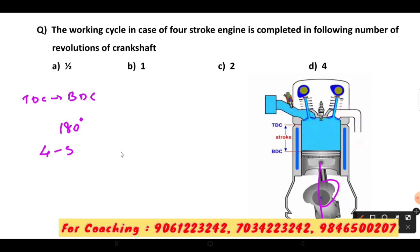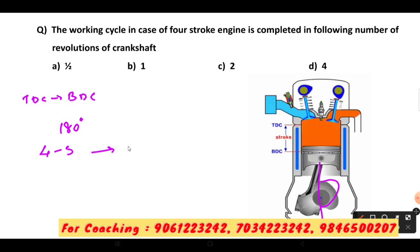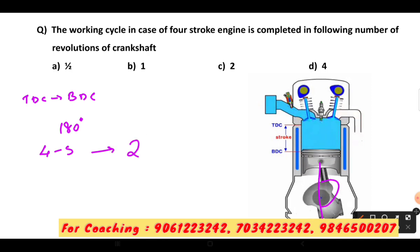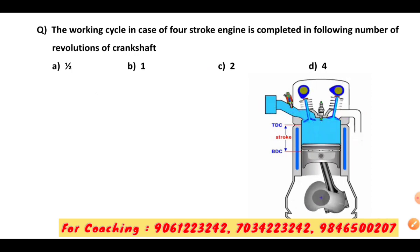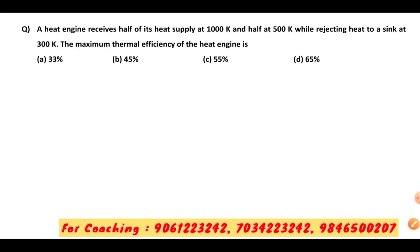Using a heat sink at 300 Kelvin, what is the maximum thermal efficiency of a heat engine? Options are 33, 45, 55, and 65.